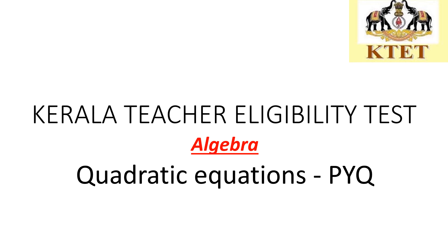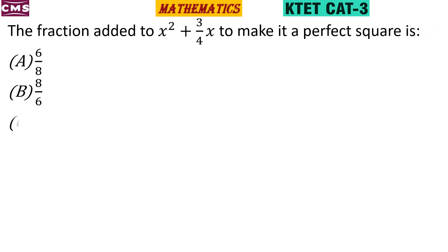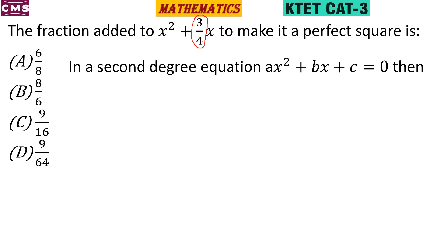We are going to talk about PYQ questions. The question is: what fraction is added to x² + (3/4)x to make it a perfect square? We are going to use square completion to solve this. For a perfect square, we apply the method of square completion.